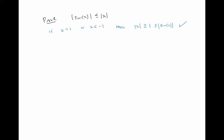So we really just need to focus on showing that the absolute value of sine x is less than or equal to the absolute value of x for x values with absolute value less than one. To do this, let's consider the function f of x, which is sine x minus x.